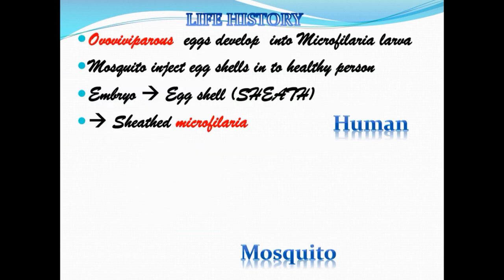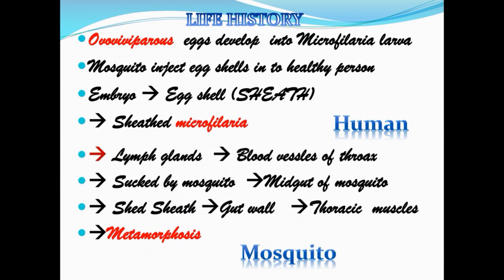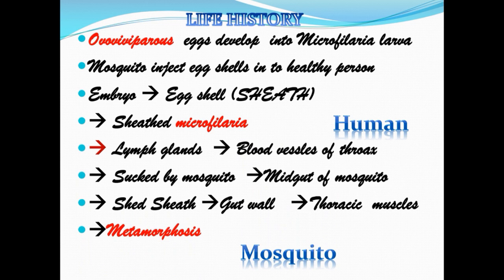As it is ovoviviparous, eggs develop into micro filarial larva. The mosquito injects the embryo, which is enclosed in an egg shell forming a sheath — the micro filarial larva. It enters the lymph glands and blood vessels of the thorax, then is sucked by the mosquito and enters the mid gut of the mosquito, where they shed the sheath.